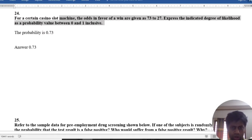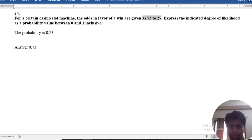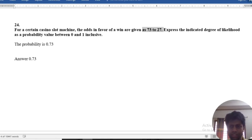In a slot machine, odds in favor of machine wins are given 73 to 27. Express the indicated degree of likelihood as a probability between 0 to 1 inclusive.